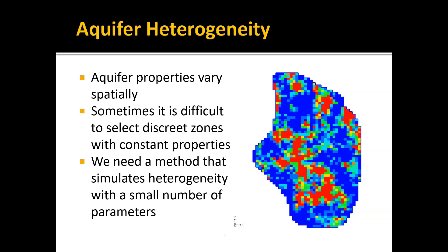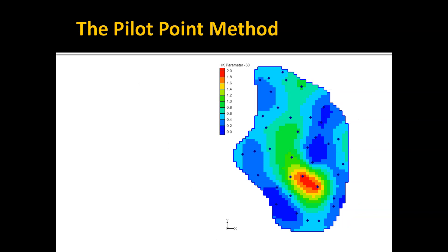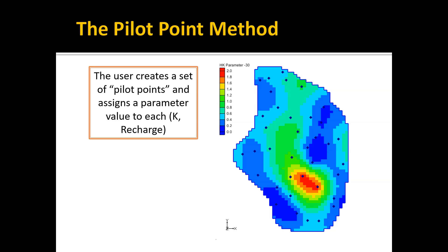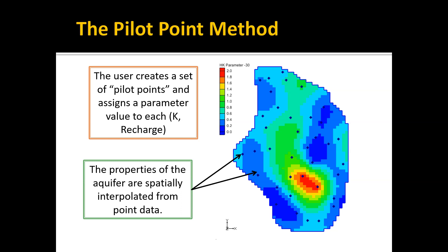With the pilot point method, the user creates a set of points at discrete locations in the aquifer, called pilot points, and we assign a parameter value to each. It's typically used for hydraulic conductivity, sometimes for recharge as well. The properties of the aquifer are spatially interpolated from these discrete locations to the corresponding MODFLOW array using a spatial interpolation algorithm, typically kriging or inverse distance weighted interpolation. This can give you any kind of complex shape or distribution of the properties.